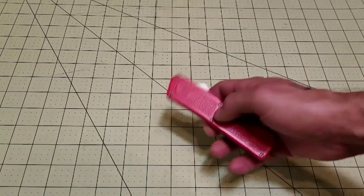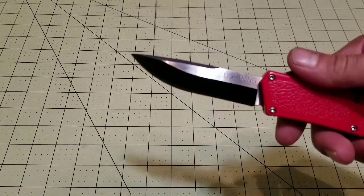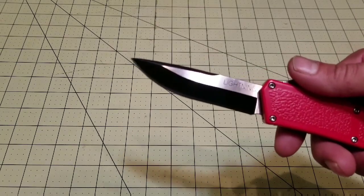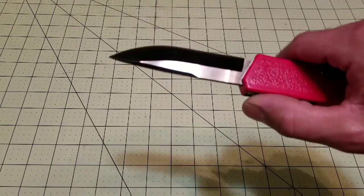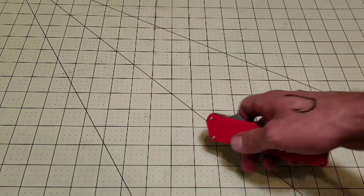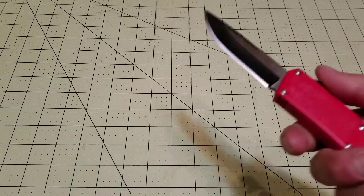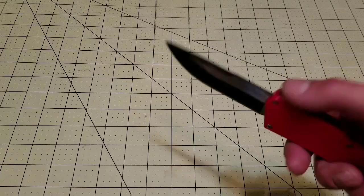But yeah, definitely some nice action on it. Aluminum handle, stainless steel blade. It doesn't say what it is. I imagine it's either a 3CR or a 420JC, something like that. Who knows? But you know, it's an OTF. You're not going to use it for real hard work.